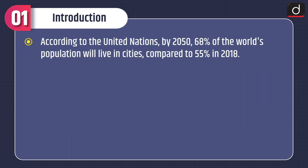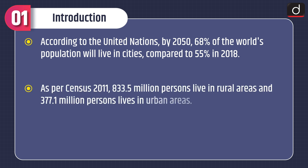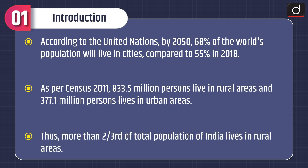According to the United Nations, by 2050, 68% of the world's population will live in cities, compared to 55% in 2018. As per census 2011, 833.5 million persons live in rural areas and 377.1 million persons live in urban areas. Thus, more than two-thirds of the total population of India lives in rural areas.